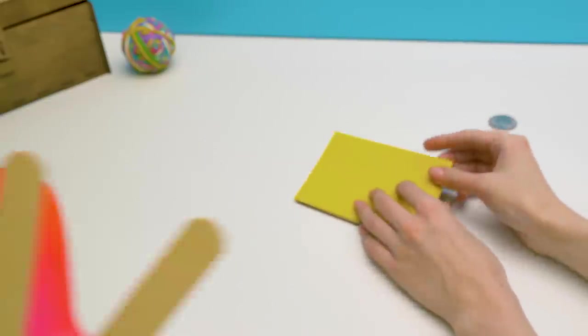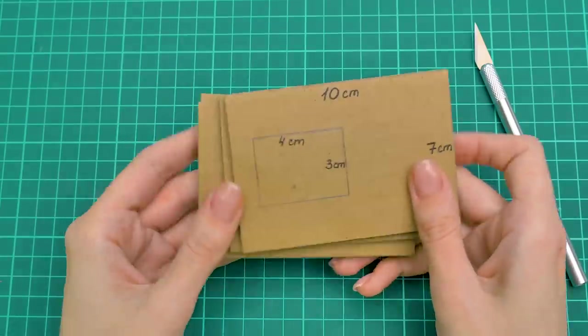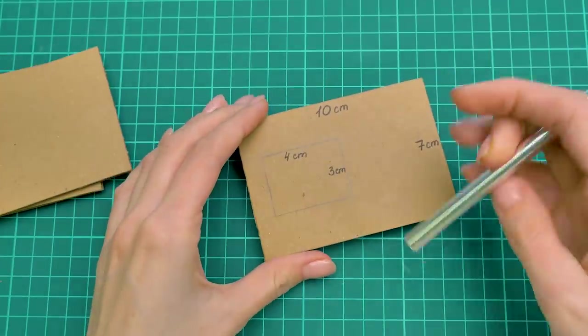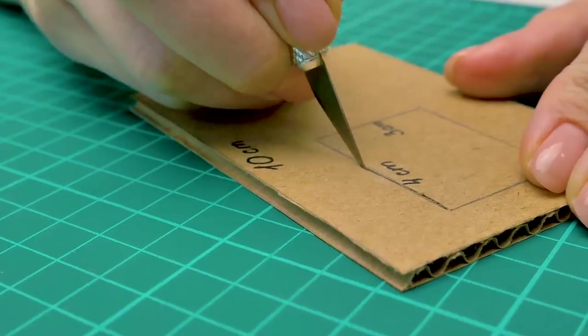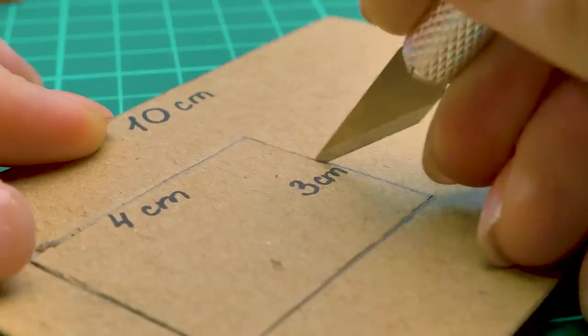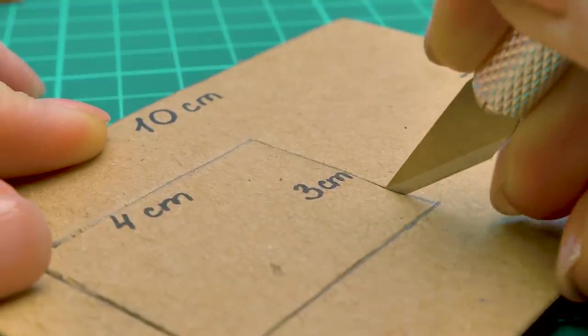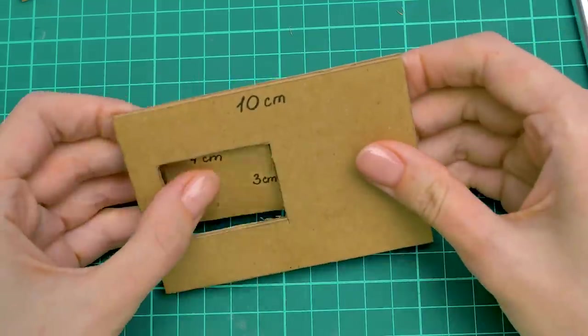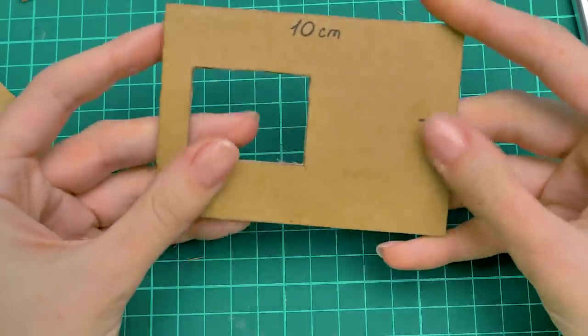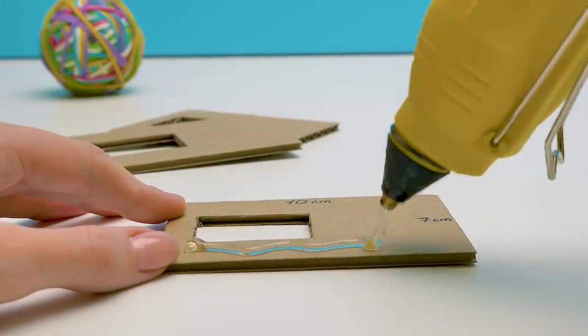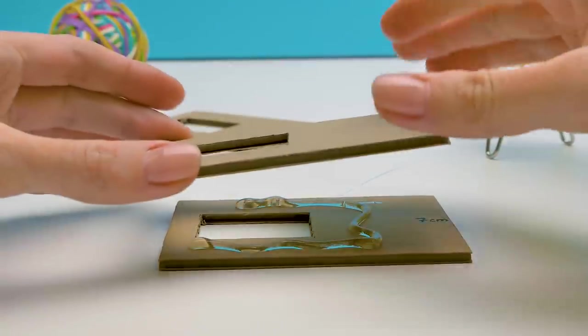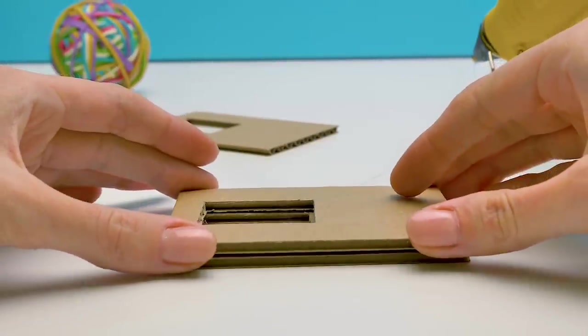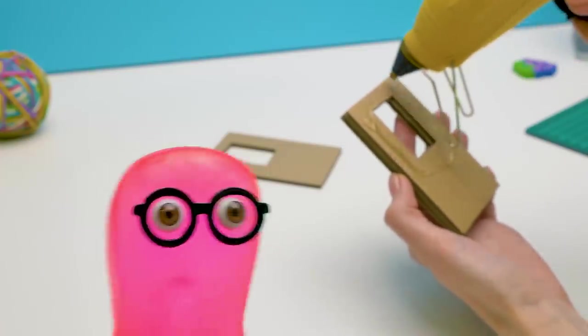Alright, and I'll start with the cardboard. As usual, we'll make some base details first. I'll need a few parts with holes. Remember to be careful with the cutter. And the cut must be precise.